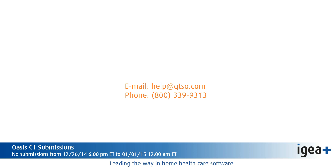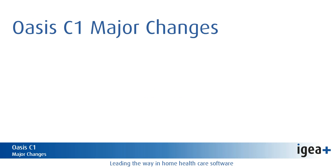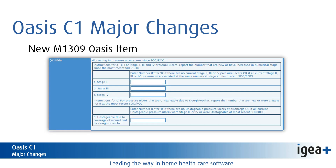As far as the OASIS-C1 changes, we want to talk about the OASIS-C1 ICD version, and we'd like to start with a bigger change: the introduction of M1309 OASIS item. This item documents the number of pressure ulcers that are new or have worsened — increased in numerical stage since the most recent start of care or resumption of care assessment. M1309 was added for the discharge OASIS only. Definitions of pressure ulcer stages are derived from the National Pressure Ulcer Advisory Panel. We have added M1309 to our IGEA HHC OASIS-C1 version as well as our IPOC OASIS-C1 forms.